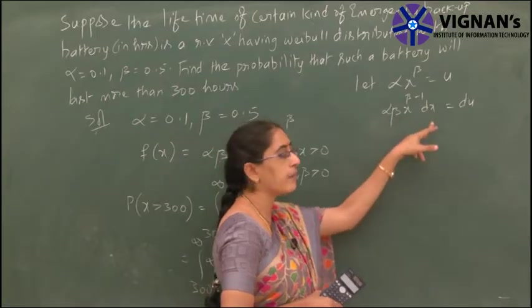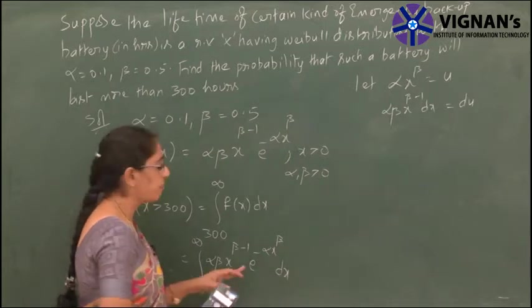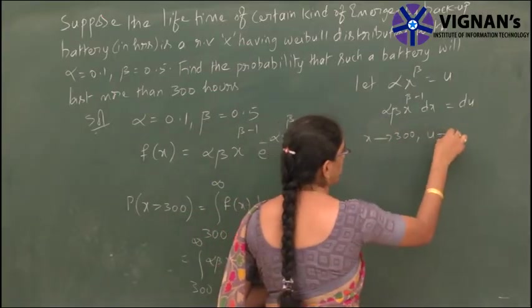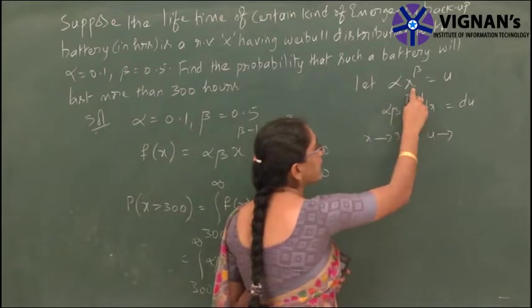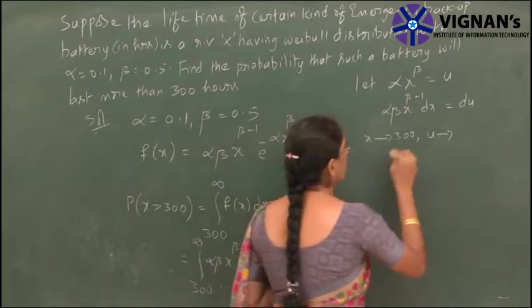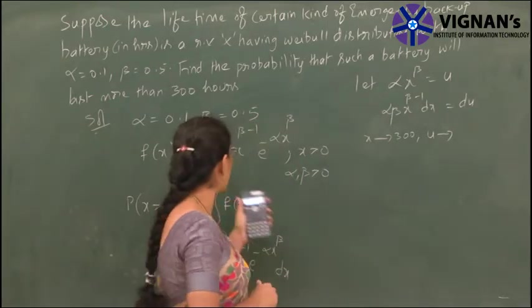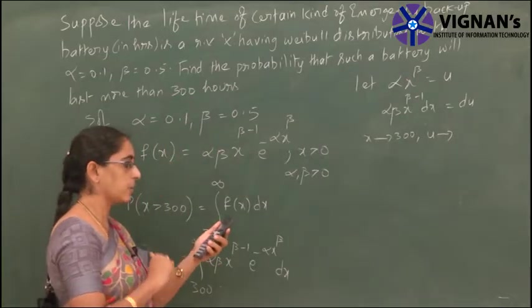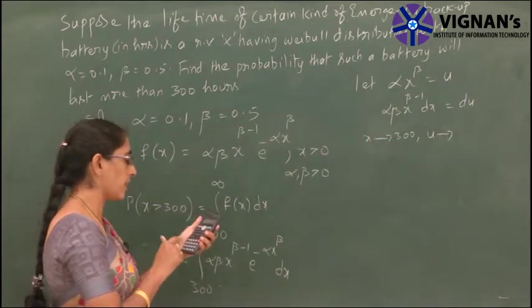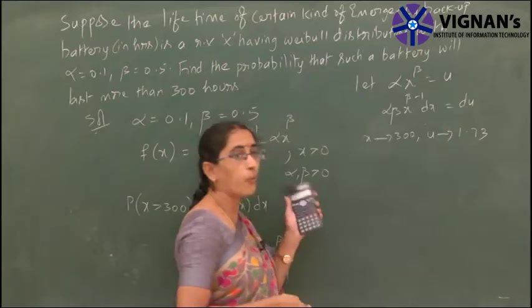So alpha·beta·x^(beta-1) dx becomes du and e^(-alpha·x^beta) becomes e^(-u). Coming to the limits: when x tends to 300, u equals alpha·(300)^beta. So 300^(0.5) equals 17.32, and multiplying by alpha = 0.1 gives 1.73. So when x tends to 300, u tends to 1.73. When x tends to infinity, u tends to infinity.